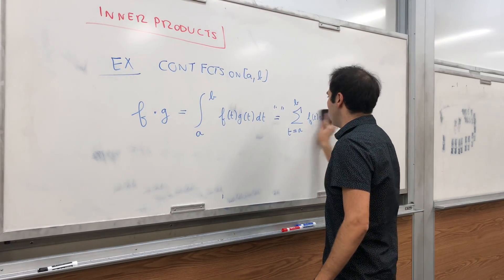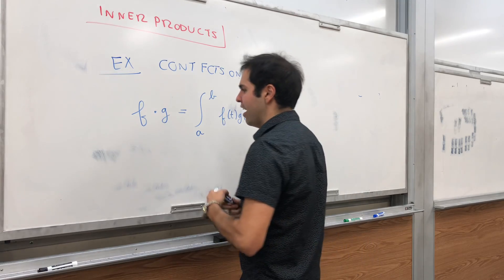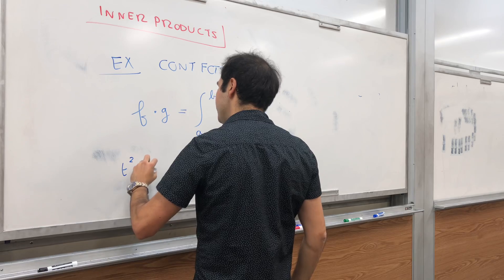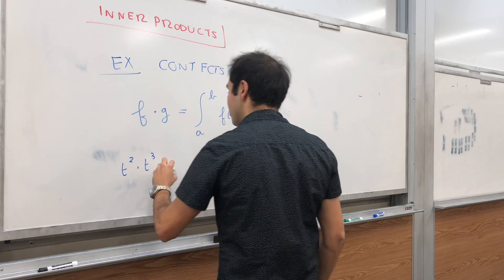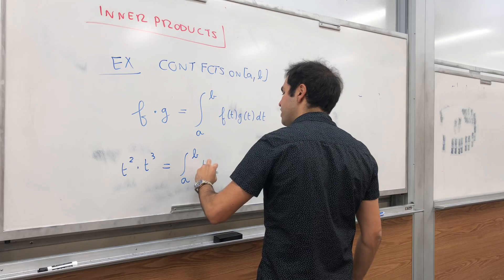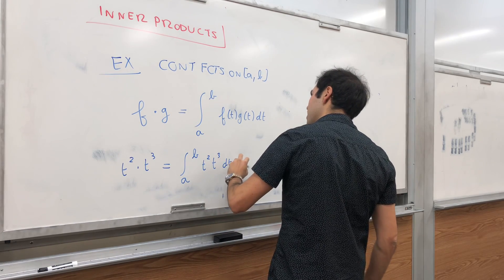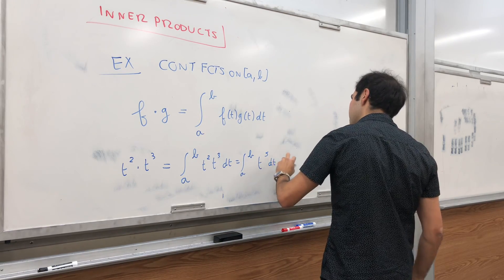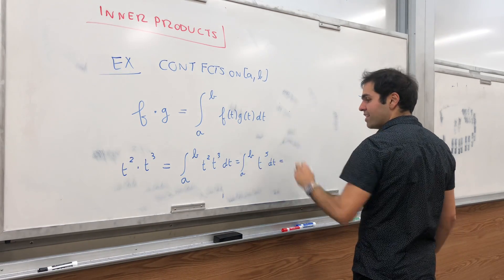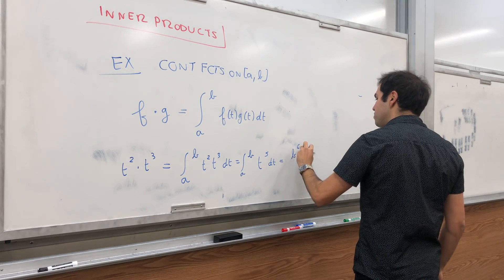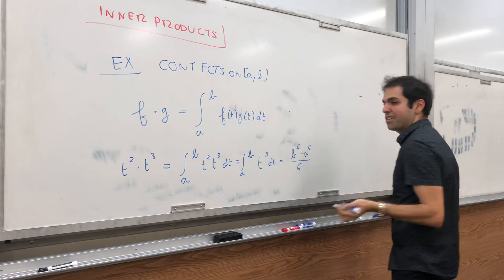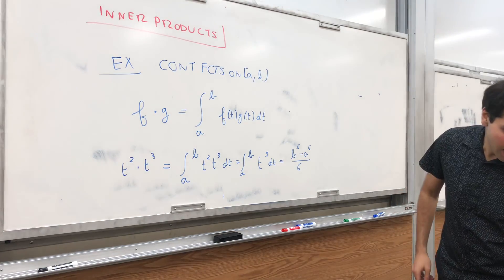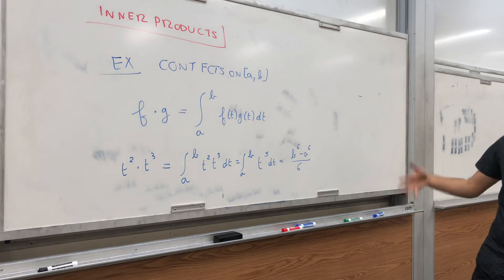For example, take t² dotted with t³. That's just ∫ₐᵇ t²·t³ dt = ∫ₐᵇ t⁵ dt. The antiderivative is (1/6)t⁶, so you get (b⁶ − a⁶)/6 — a number, which is exactly what you'd expect from a dot product.